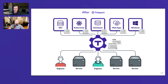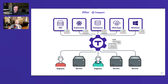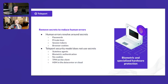Teleport has access policies and audits so engineers and services only have access to certain roles and resources on demand. We started with SSH and Kubernetes and have continued to add databases, web applications, and Windows desktops. What's unique about Teleport compared to other solutions is that we go very deep on the protocol — for Postgres or MySQL we speak that protocol natively, giving more information in our audit log. We also remove secrets entirely: no passwords, no private keys — everything is certificate-based with stateless agents, biometric authentication, TPMs, and HSM backing.